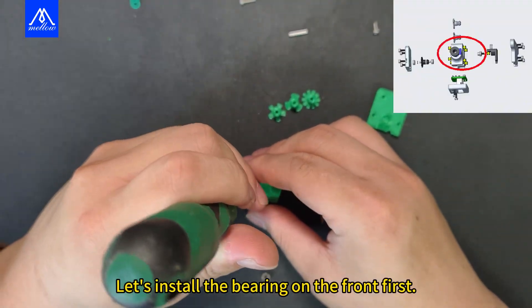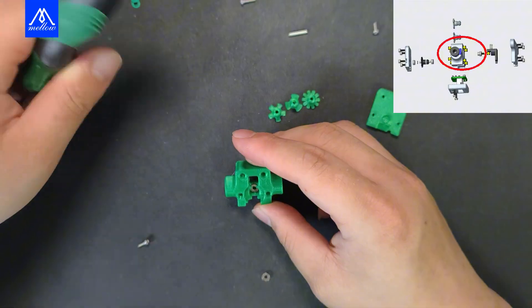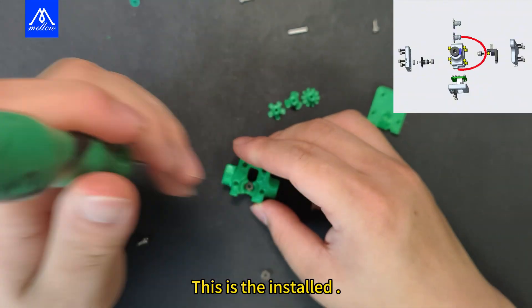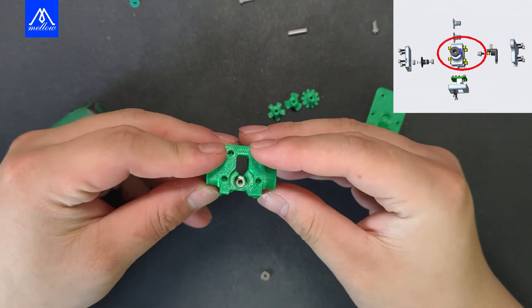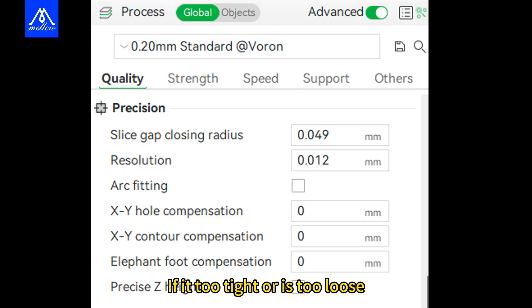Let's install the bearing on the front first. This is the installed. If it's too tight or too loose, please go to slicing software, then quality. Find XY compensation. Adjust it to the appropriate size.